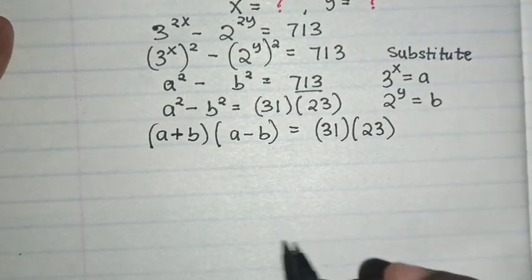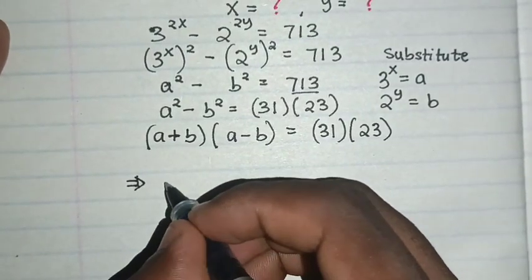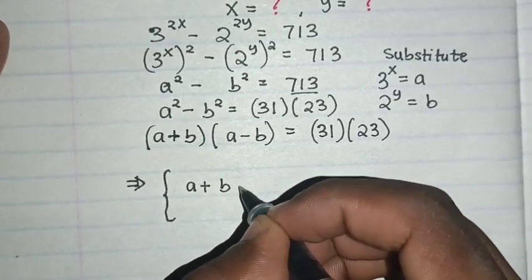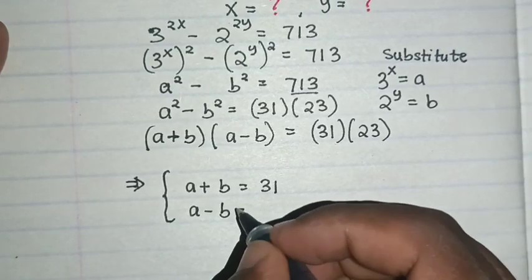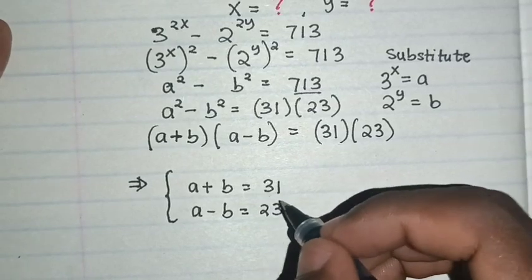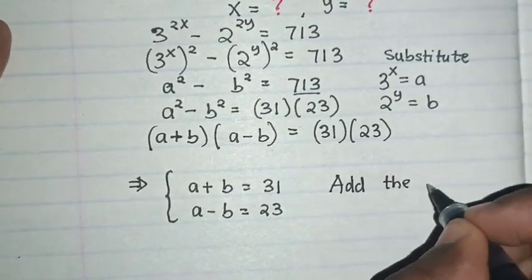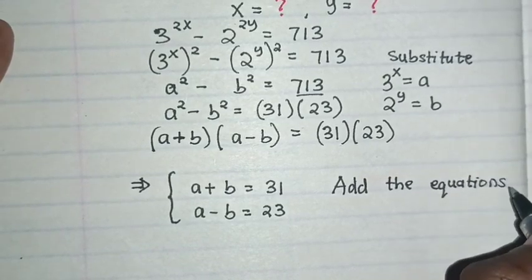So from here we know a + b is equal to 31 and a - b is equal to 23 as a comparison. So we add the equations.